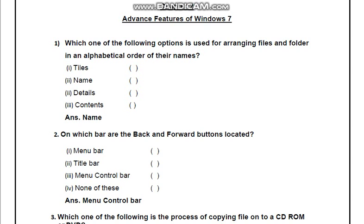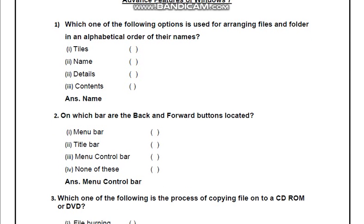On which bar are the Back and Forward buttons located? Options: Menu bar, Title bar, Menu control bar, None of these. Answer humara Menu control bar.